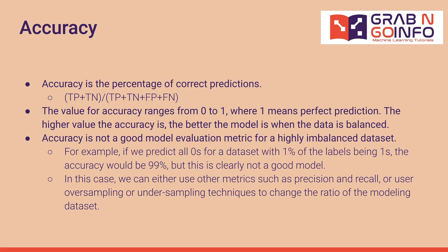Accuracy is not a good model evaluation metric for a highly imbalanced dataset. For example, if we predict all 0 for a dataset with 1% of the labels being 1, the accuracy would be 99%, but this is clearly not a good model. In this case, we can either use other metrics such as precision and recall, or use oversampling or undersampling techniques to change the ratio of the modeling dataset.